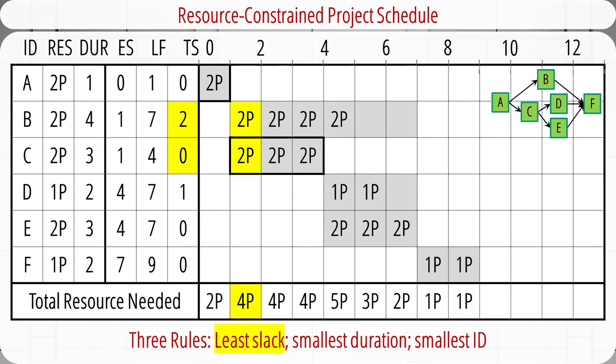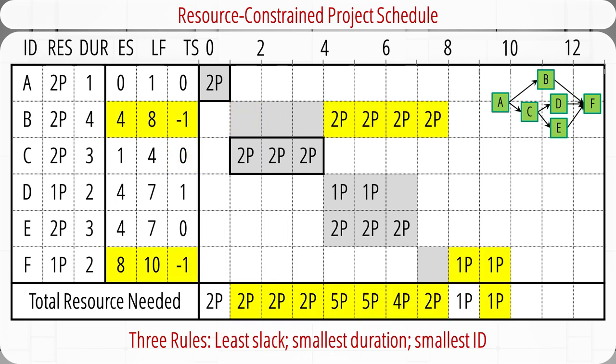Applying Rule 1, we find activity C has the least slack, so it should start next. Then we consider activity B — it requires two programmers, but only one is remaining because we already assigned the other two to activity C. Therefore, we need to delay activity B by three weeks so that it doesn't overlap with activity C.